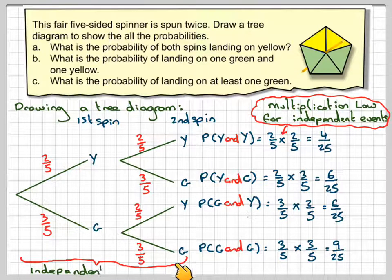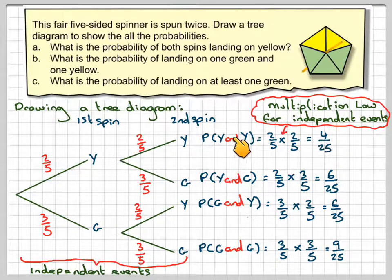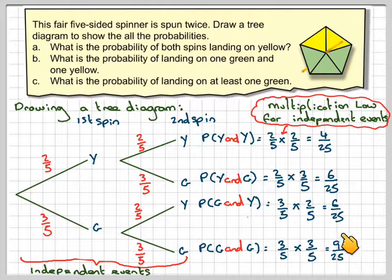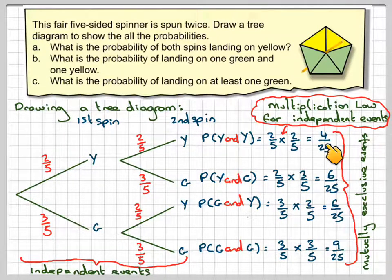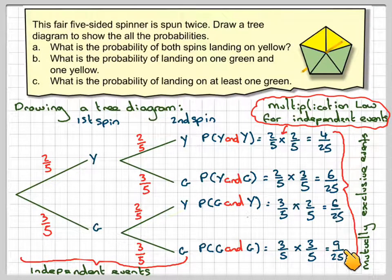These events are independent events, and the tree diagram is very good for showing independent events. The four outcomes — yellow-yellow, yellow-green, green-yellow, and green-green — are mutually exclusive: only one of these things will actually happen if I carry out the experiment. And if you add up all the probabilities: four plus six is ten, sixteen plus nine is 25, so 25 out of 25 equals one. All the probabilities must sum up to one.